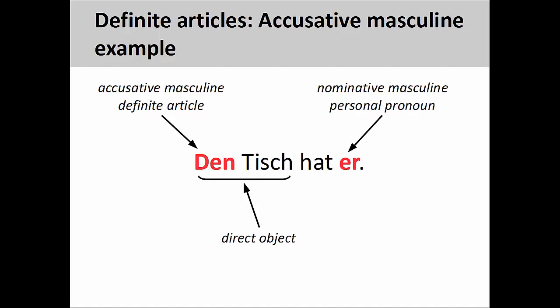Definite articles are really important for helping us make sense of what is going on in the sentence. You'll recall from an earlier presentation that we can emphasize sentence elements in German by putting them in the first position. Although Den Tisch here comes in the first position, the masculine definite article tells us that it is the direct object and in the accusative case.